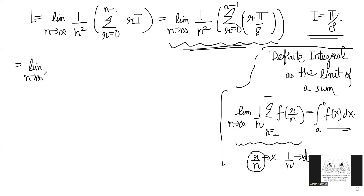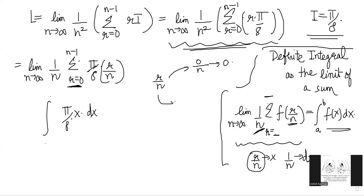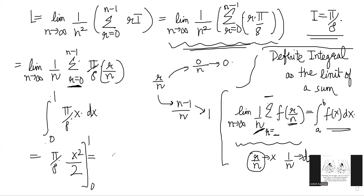We rewrite our expression as limit n → ∞ of (1/n) · summation from r = 0 to n − 1 of (π/8) · (r/n). This is now in the correct form, so it transforms into the integral from 0 to 1 of (π/8) · x dx. The lower limit comes from 0/n → 0, and the upper from (n − 1)/n → 1. Evaluating: π/8 · [x²/2] from 0 to 1 = π/8 · 1/2 = π/16. So L = π/16.